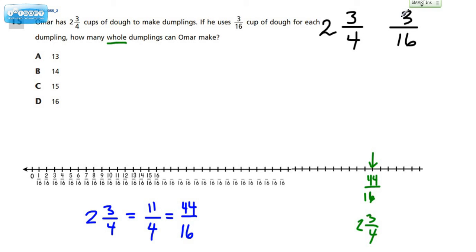Alright, so now if we look for groups of three-sixteenths, here's a group of three-sixteenths, let's circle it. Here's another group, one, two, three-sixteenths. Here's another group, one, two, three-sixteenths. Here's another one, and so forth and so on. Now we're not going to finish the picture. We'll come back to that.